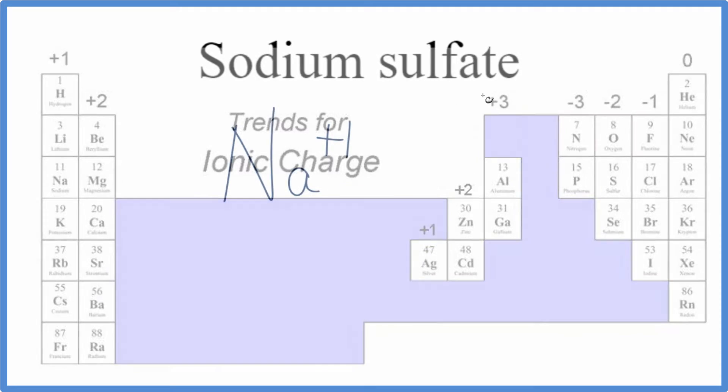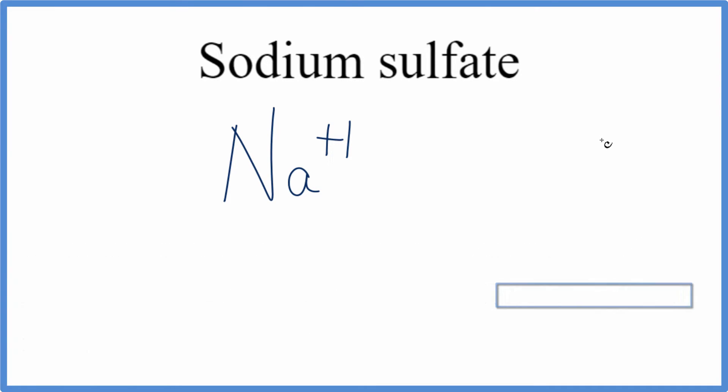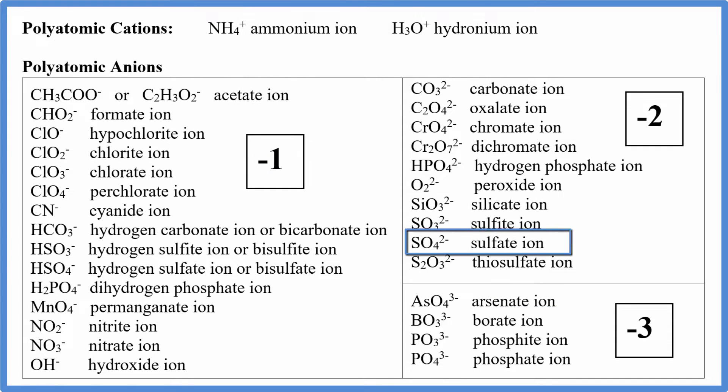When we look at sulfate, we're not going to find sulfate on the periodic table. We see the ATE at the end. That means we'll look at a list of common polyatomic ions to find its name. If we look at the list, we see sulfate is SO4, two minus.